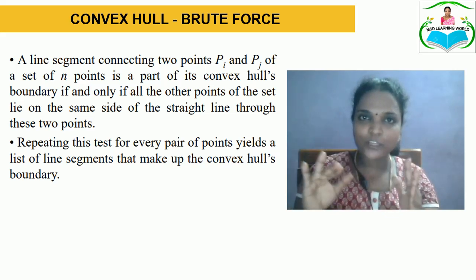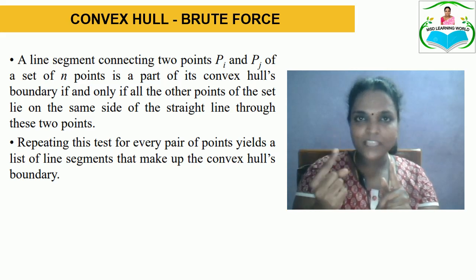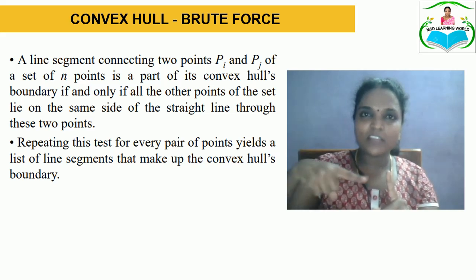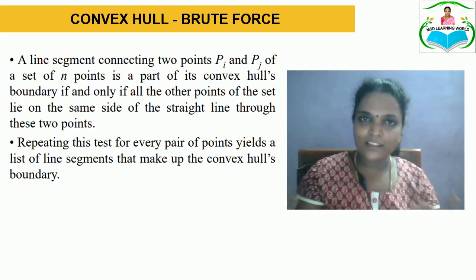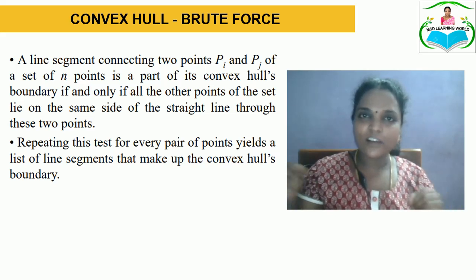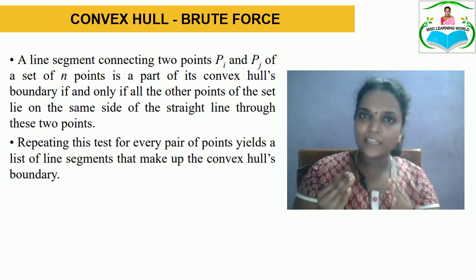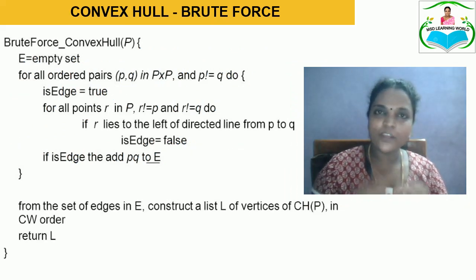If any of the lines comes in the other direction, it means that point is not going to be one of the points that forms the polygon. Likewise, for the second point, lines are drawn to all other N minus 1 points to check whether all lines form the same direction. This is repeated for all N number of points. At last, those lines which intersect each other are connected to form a polygon — that is the brute force approach.